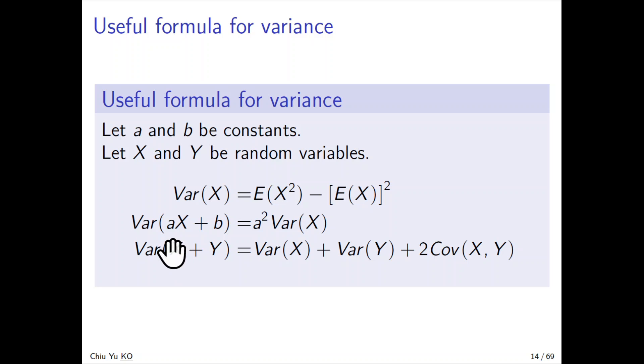The second property is Var(aX + b), where you add a constant and multiply by a constant. First, there's no b in the result, and a becomes a². This interesting property is due to the fact that variance is measuring dispersion. If you shift by b, add or subtract b—whether b is positive or negative, it doesn't matter.